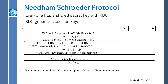Two people did modifications. First was Denning, who said we will put a timestamp and that fixes it. However, the problem with timestamps is they need synchronized clocks, which are not always possible. So somebody else fixed it by putting a nonce along with the timestamp, so now the timestamps can be looser — they don't have to be very tight. And so now this is the final protocol of four messages: one, two, three, four.